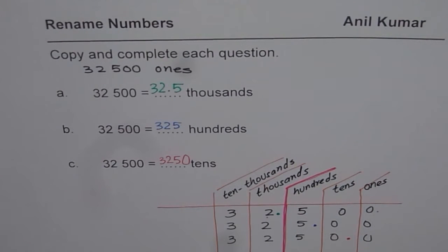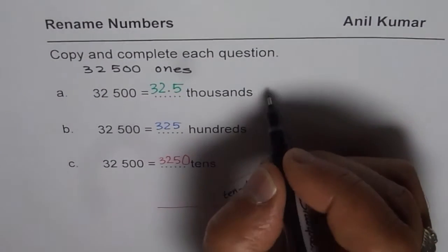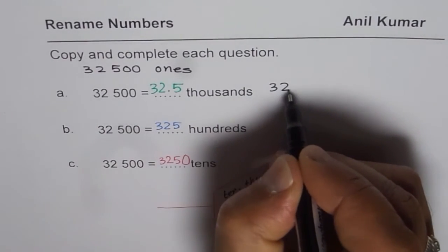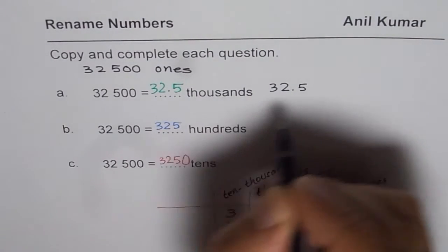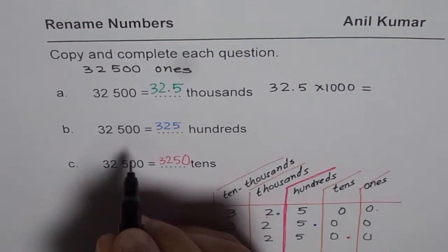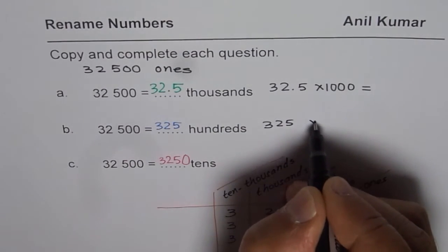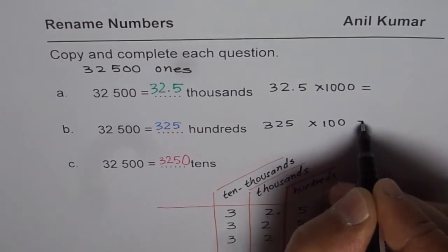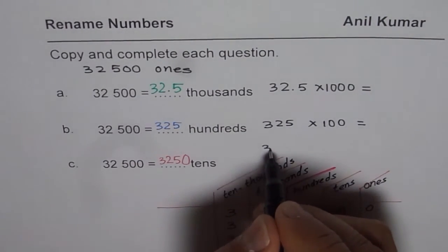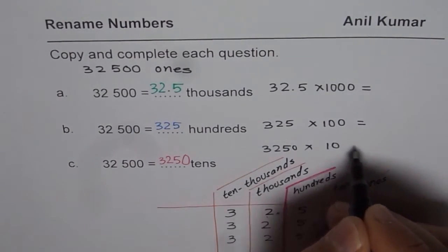You can test whether it is the same number or not. When we say 32.5 thousand, you can take a calculator. Multiply 32.5 by thousand. What do you get? Similarly, you can take the number 325 times it with hundred. What do you get? And 3250 times that with tens. What do you get?